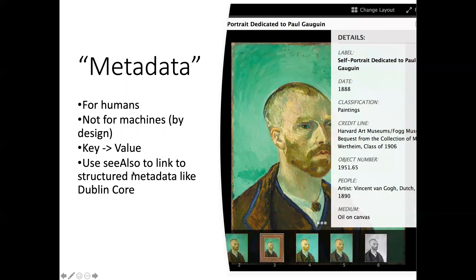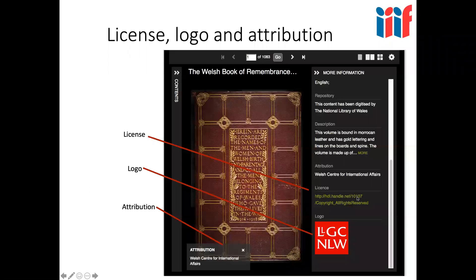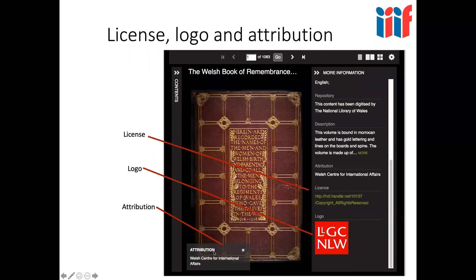The 'see also' link goes to more structured metadata like EDM or any other metadata format. Looking at other values: the license is shown here, and in the next version there's a much more restricted list of licenses — it can either use a rightstatements.org or Creative Commons licence, and you're encouraged to use those rather than a customized version. Then there's the logo, in this case the National Library of Wales logo, and the attribution which must be shown by a viewer and tells you who owns the material.